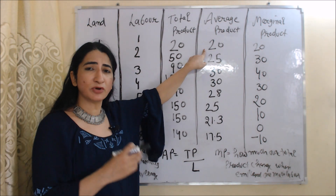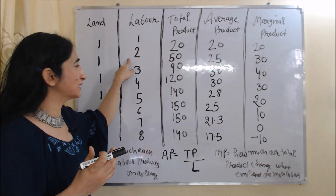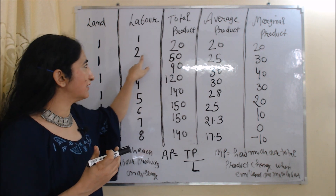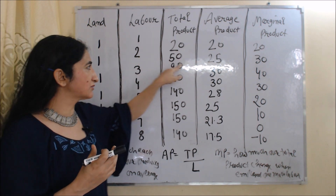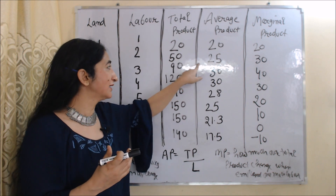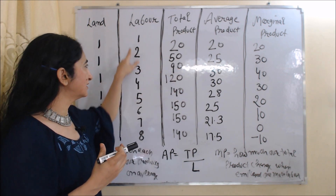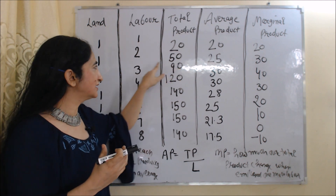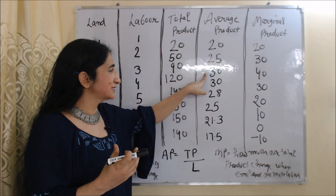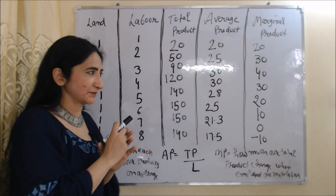For example: in the first case, labor is 1 and TP is 20, so AP = 20 ÷ 1 = 20. In the second case, labor is 2 and TP is 50, so AP = 50 ÷ 2 = 25. In the third case, TP is 90 and labor is 3, so AP = 90 ÷ 3 = 30. Similarly, you can calculate average product for other units.